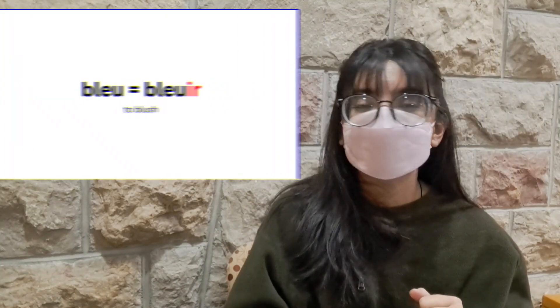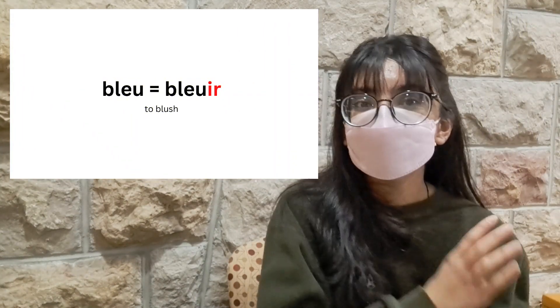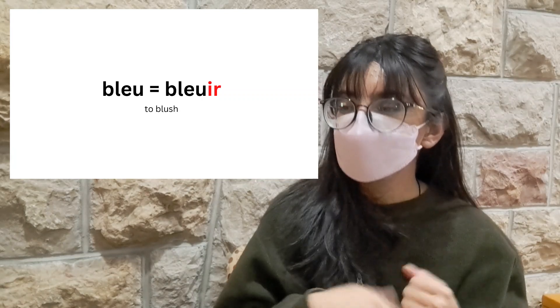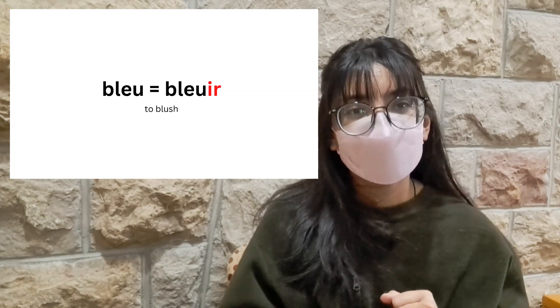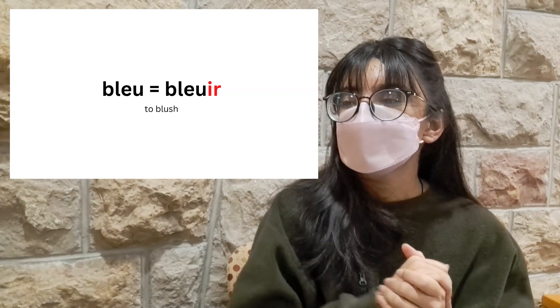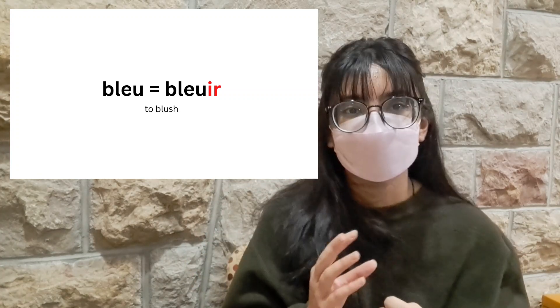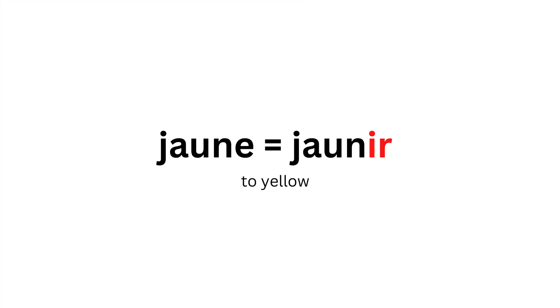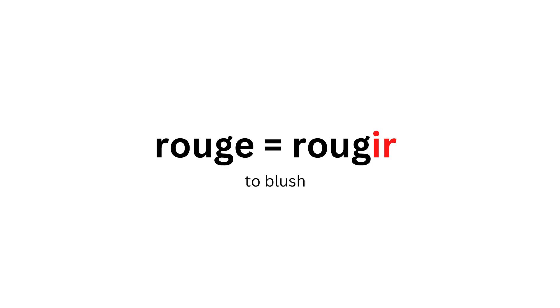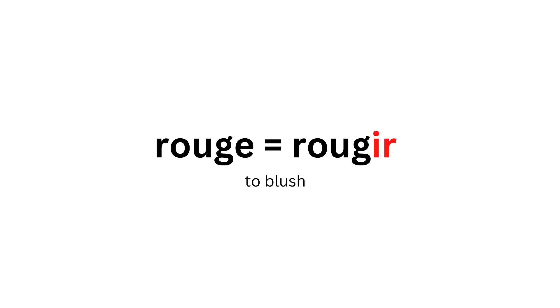Another verb to introduce is bleu, which means blue. If I want to turn this into a verb, it becomes bleuir. Another example would be brun, which means brown — turning that into a verb gives brunir. Similarly for all the other color adjectives: jaune becomes jaunir, noir becomes noircir, rouge becomes rougir, and vert becomes verdir. These are all how you change the color adjectives into verbs — your aim is to turn them into an IR verb.